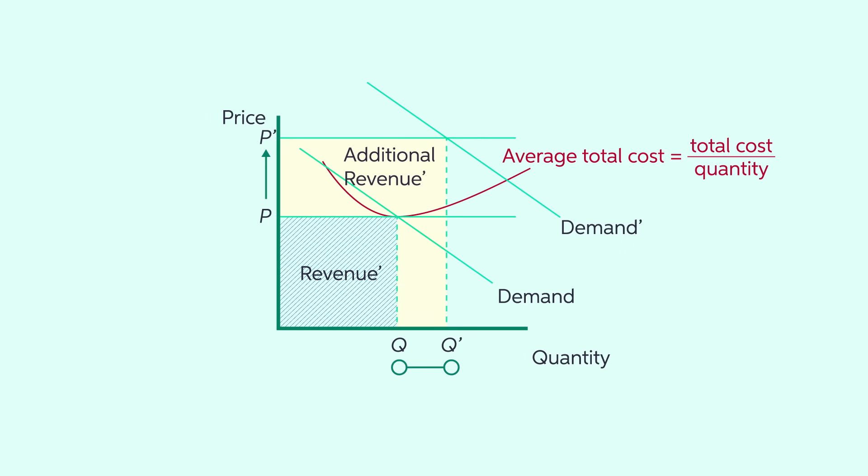In an environment of perfect competition, there is no profit. Total revenue equals total cost, as shown by box PQ.